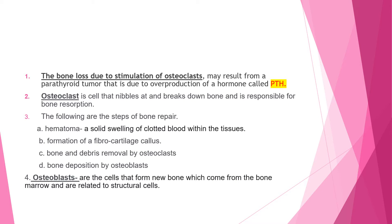Number three: the following are the steps of bone repair. The first step is hematoma, which means a solid swelling of clotted blood within the tissues. Next is the formation of a fibrocartilage callus. The third step is bone and debris removal by osteoclasts. The last step is bone deposition by osteoblasts — the cells that form new bone, which come from the bone marrow and are related to structural cells.